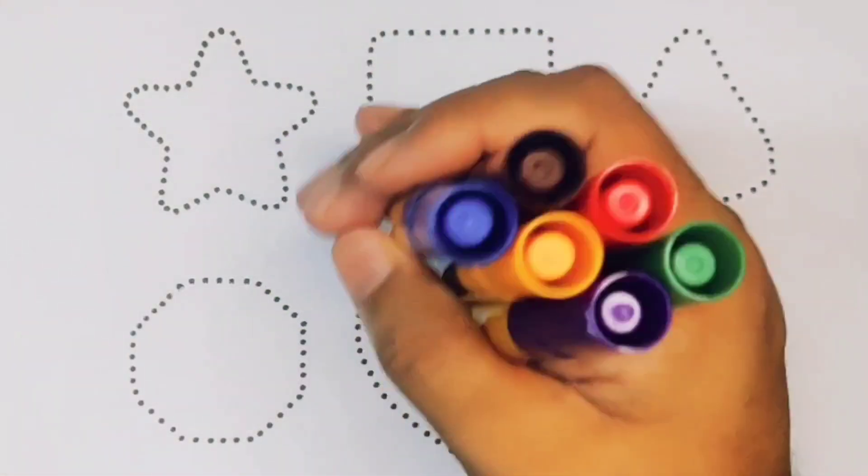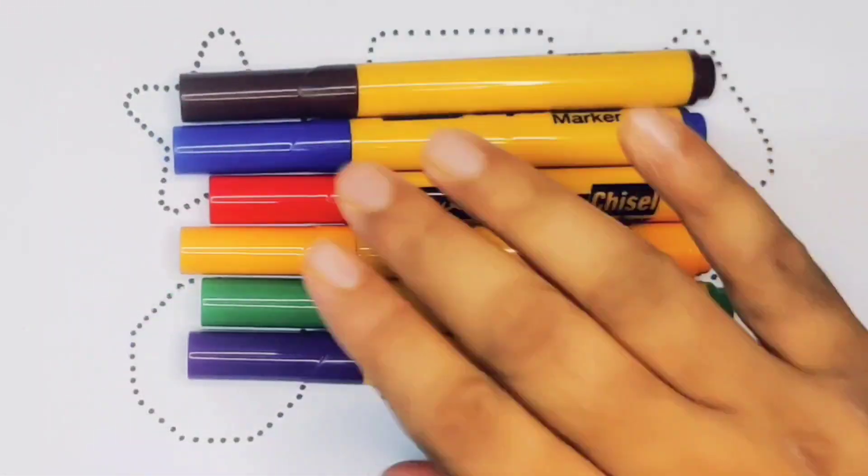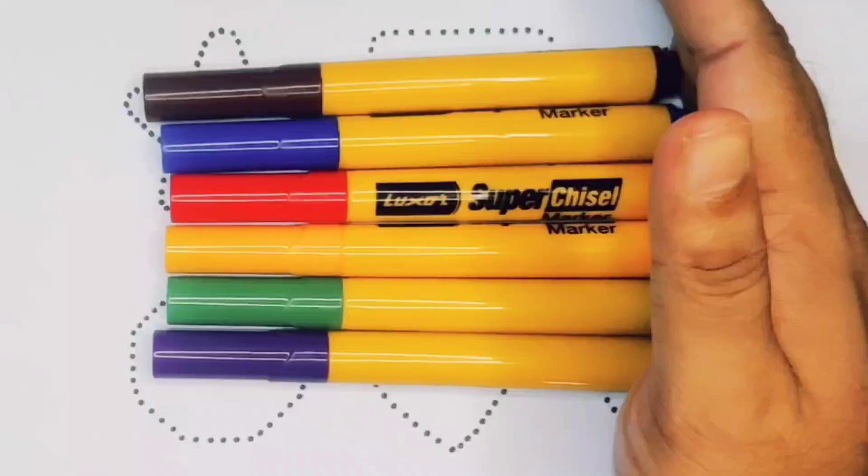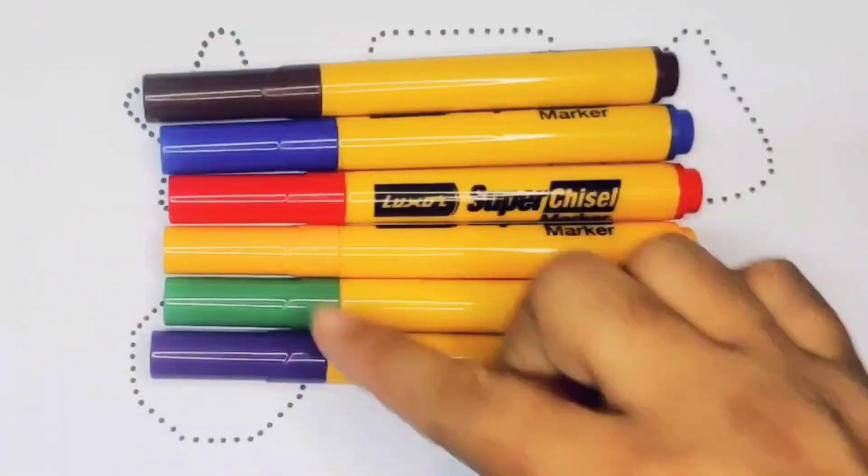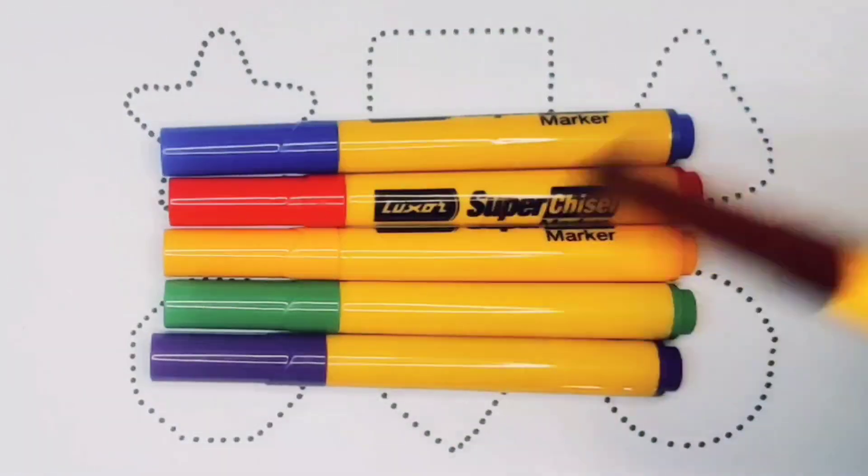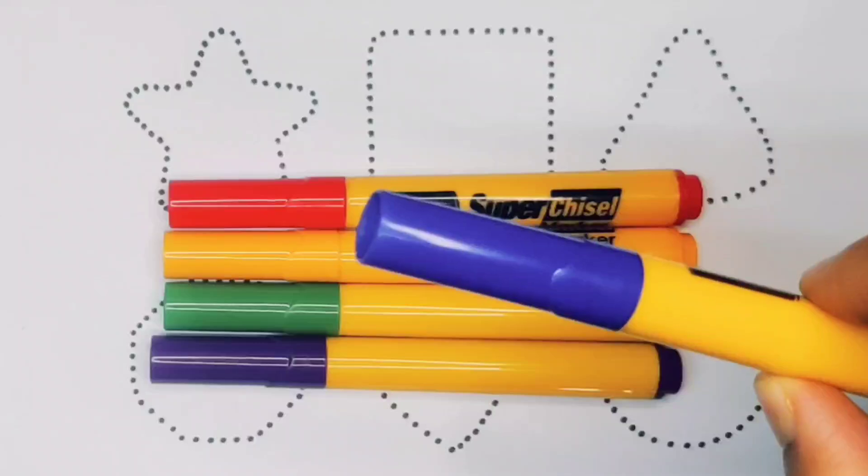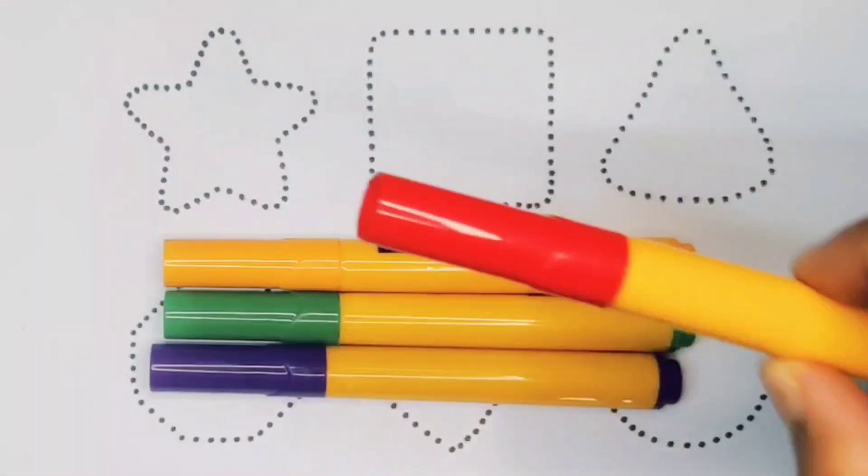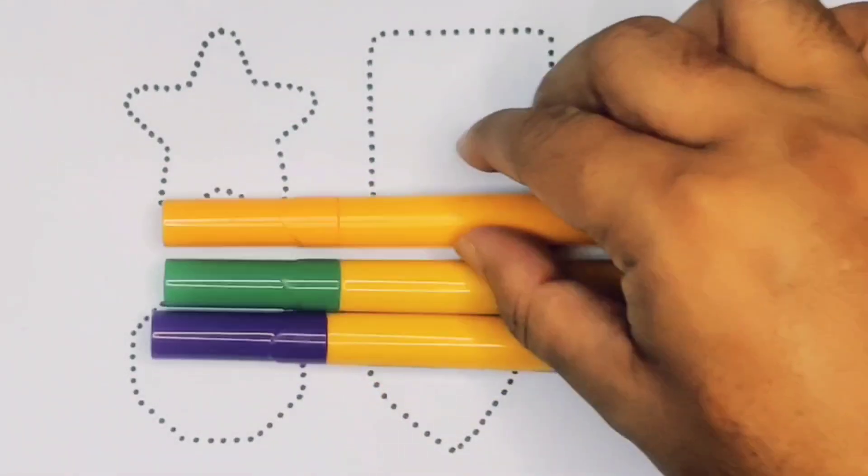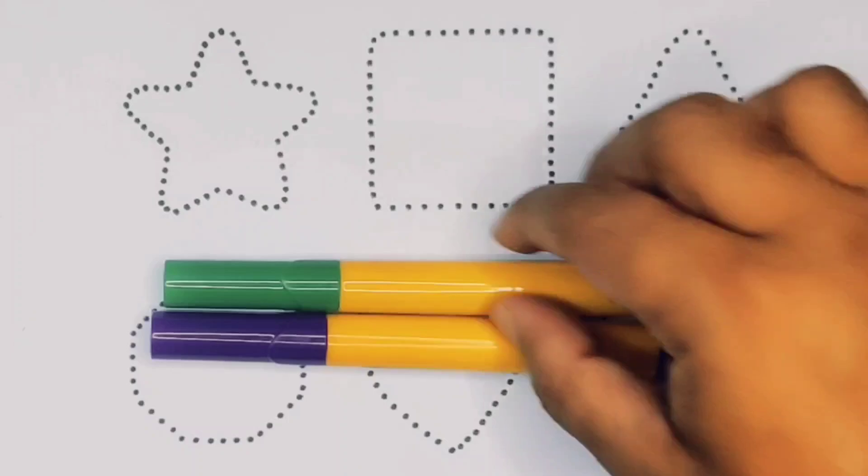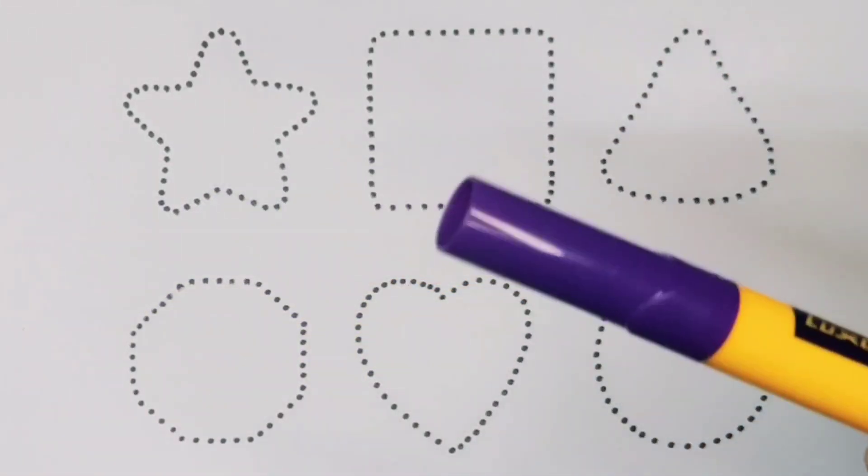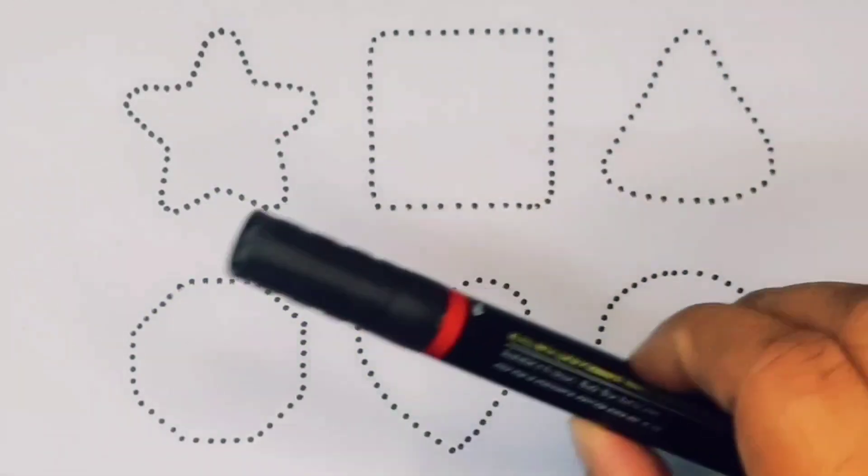Hello kids, welcome to my new video. First we're going to learn the color names: chocolate color, blue color, red color, orange color, green color, purple color, and black color.